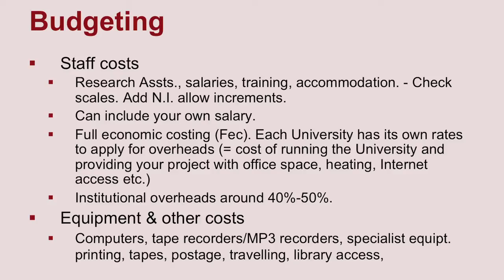Alongside identifying who the staff are, you have to think about how much they cost — their salaries and the extras on top. I mentioned national insurance and increments. The employer pays a much larger amount of national insurance than the employee; this goes towards the state pension. So it always costs more than the salary. You also have to allow for increments — staff go up a bit on the scale each year.